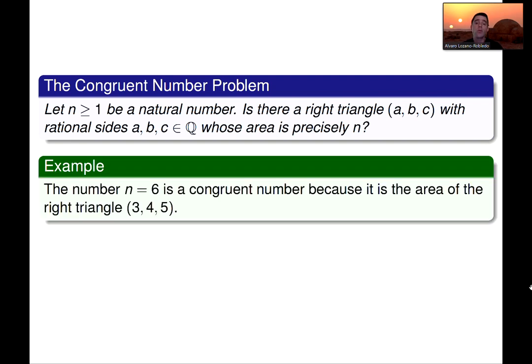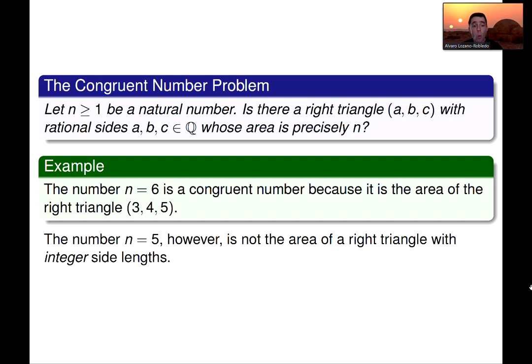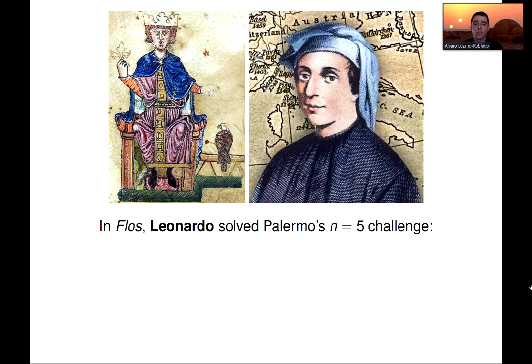So, for example, n equals 6 is a congruent number in this way, because it is the area of the right triangle 3, 4, 5. However, n equals 5 is not the area of a right triangle with integer side lengths, but it is the area of a right triangle with rational side lengths, which is still allowed in the congruent number problem. It would not be allowed to do real side lengths, so a square root of 2 is not allowed as a length. We're thinking of triangles with rational sides, and then see what are the possible areas of such triangles.